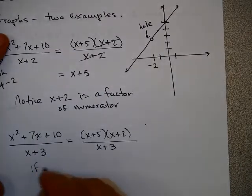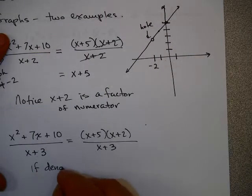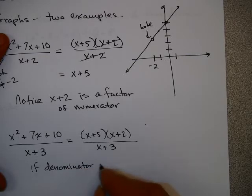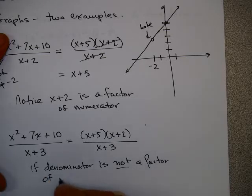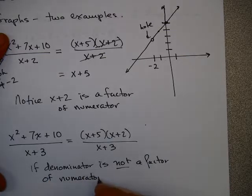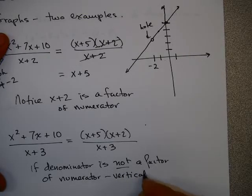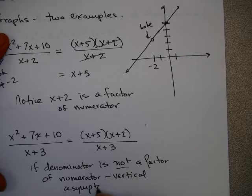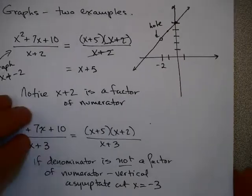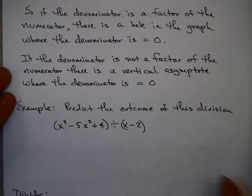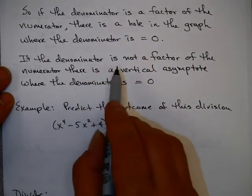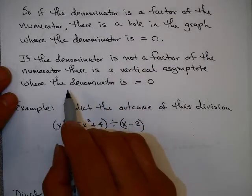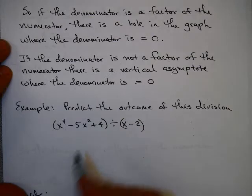So if the denominator is not a factor, is not a factor of the numerator, you have a vertical asymptote at that value. So let's summarize this. If the denominator is a factor of the numerator, there is a hole in the graph where the denominator is equal to 0. If the denominator is not a factor of the numerator, there is a vertical asymptote where the denominator equals 0.